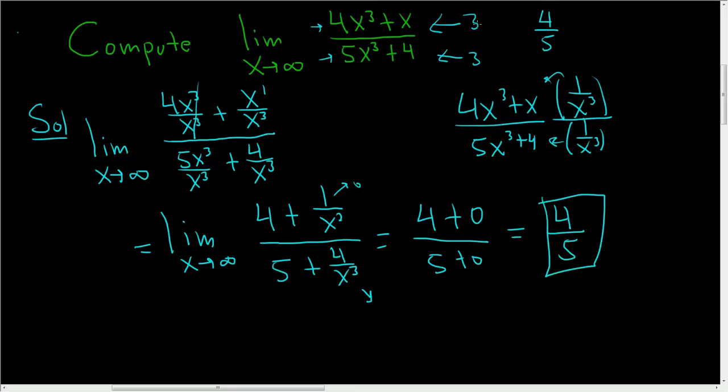So to recap, when the degrees are the same, it is the ratio of the leading coefficients. So it's 4 over 5. If the degree is bigger on the bottom, like if this was a 6, then the answer would be 0.